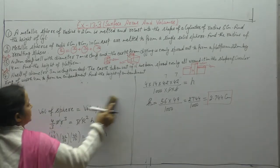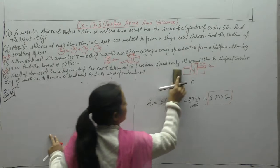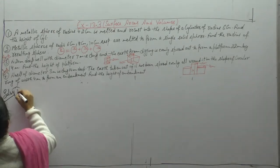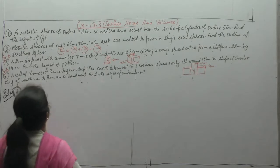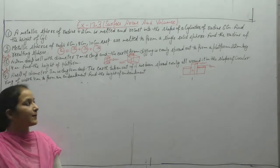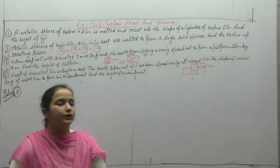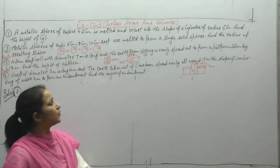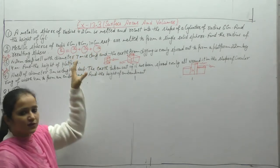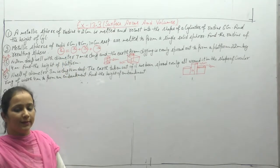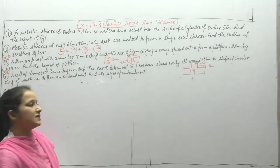Next, second question. What is given in the second question? Metallic spheres of radius 6 centimeter, 8 centimeter, and 10 centimeter respectively are melted to form a single sphere. Find the radius of the resulting sphere. These three spheres are melted to form one big sphere and we need to find its radius.